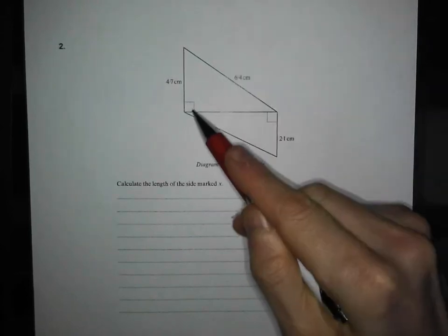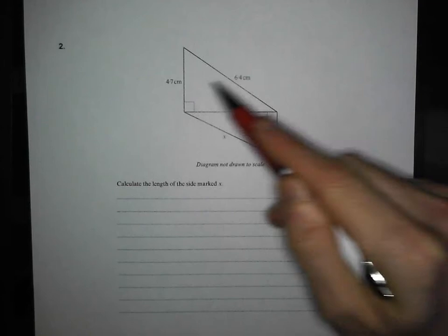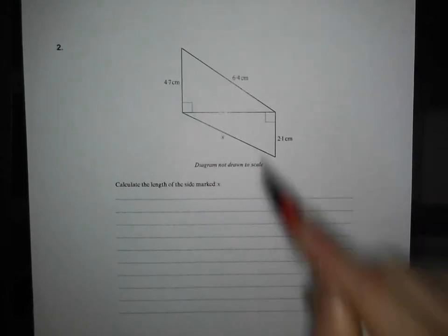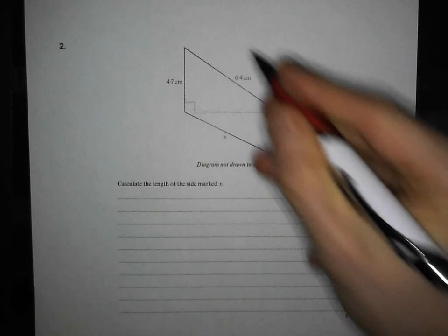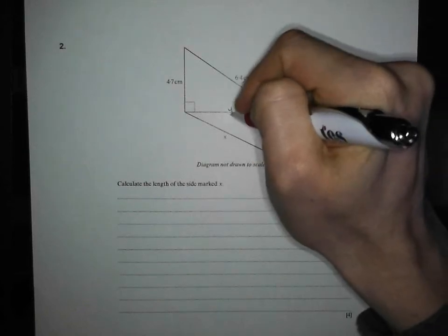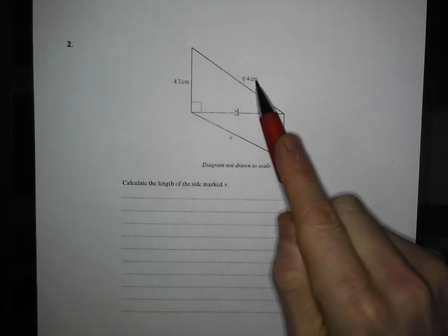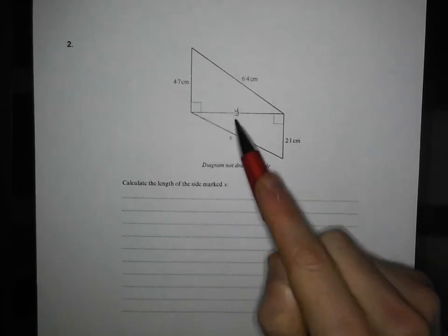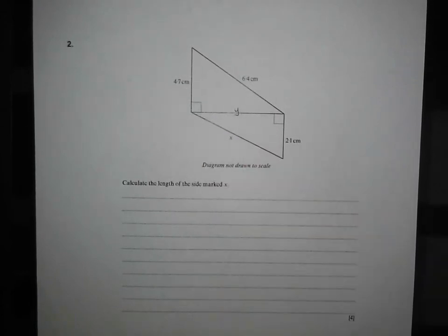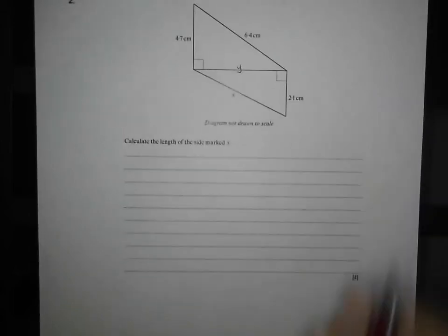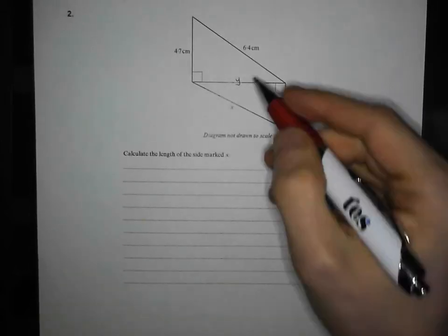Well, I've got a right-angle triangle, I've got one side here and one side there, and I'm missing a third side, so it needs to be a Pythagoras question. So I'm going to call this missing side y, call it whatever you like, and I'm going to notice I've got a hypotenuse and I've got a shorter side, and I need to work out one of the shorter sides, so it's got to be a subtraction, just like I did in question one, I think it was before. So here we go.